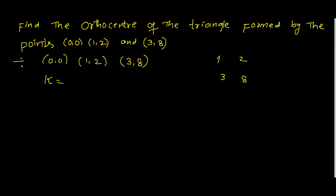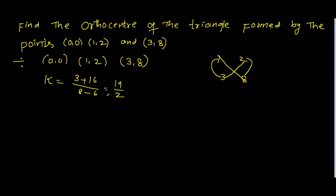Multiplying these two: 1 into 3 is 3, plus 2 into 8 is 16 — by the determinant of this value, that is 1 into 8 minus 3 into 2, that is 8 minus 6, that is equal to 19 by 2. This is the k value.